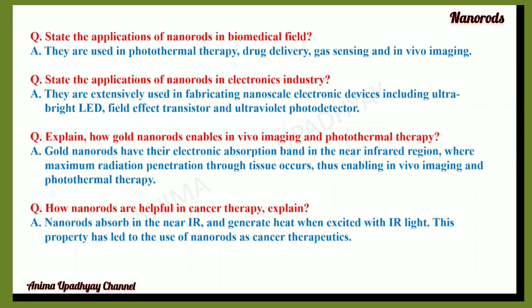How do gold nanorods enable in vivo imaging and photothermal therapy? Gold nanorods have an electronic absorption band in the near-IR region, where maximum radiation penetration through tissue occurs, thus enabling in vivo imaging and photothermal therapy. Regarding cancer therapy, nanorods absorb in the near-IR region and generate heat when excited with IR light. This property has led to the use of nanorods as cancer therapeutics.